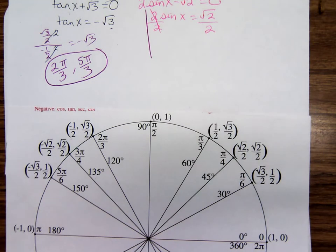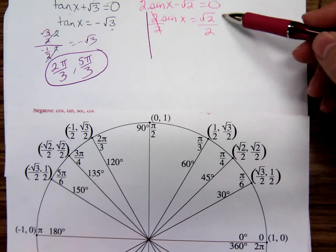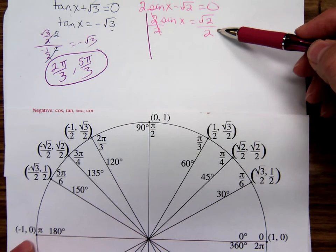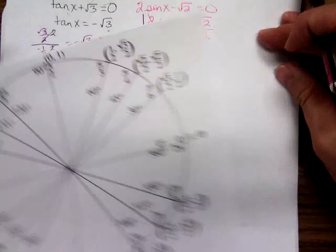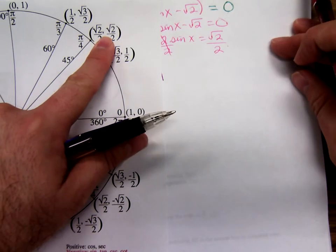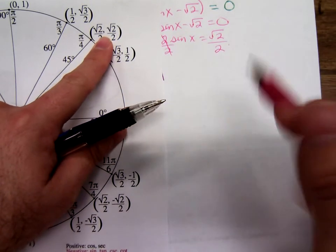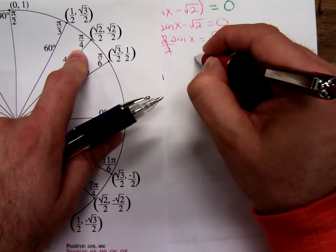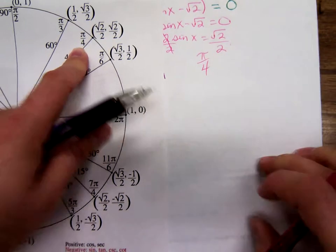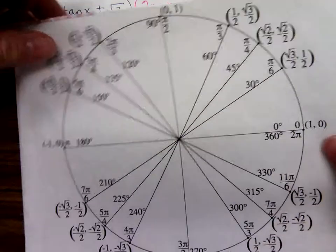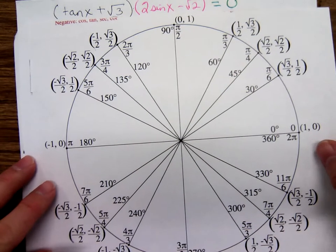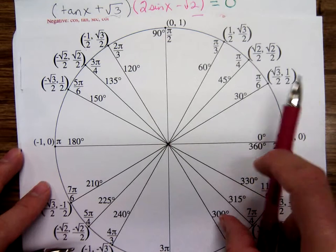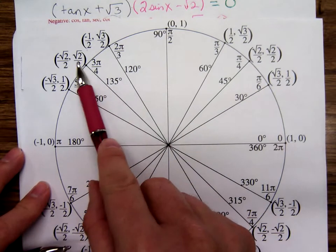Now what about the sine x equals square root of 2 over 2? Let's see. Sine would be square root of 2 over 2 at π over 4. And where else? Which sine square root of 2 over 2? 3π over 4.